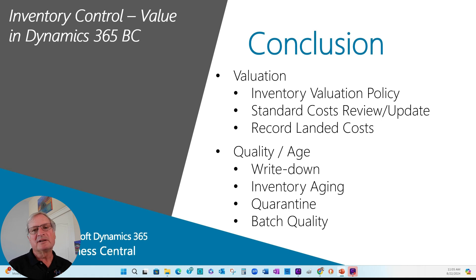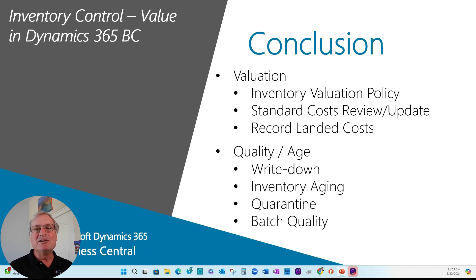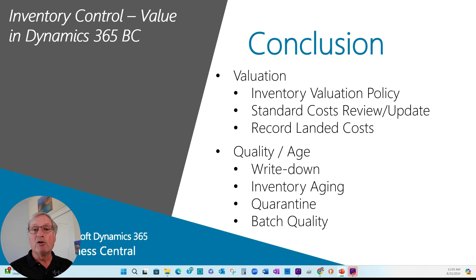So we took a look at how Business Central could help you control the valuation of your inventory in your organization. We looked at inventory valuation policies — you can have different ones for different items if you want to. We looked at how easy it is to work with standard costs, make adjustments when you need to and roll those out. We quickly looked at recording landed costs and the different ways you can do that. Then we looked at the quality aspect of inventory: writing down inventory when it loses value, looking at inventory aging to focus on items causing a problem, setting up a separate location code for quarantine items, and recording lot information about a particular batch. These are effective ways to control the valuation of the inventory in your system.